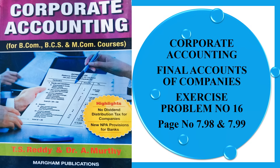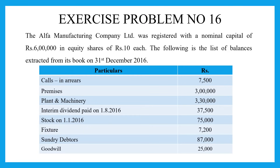Welcome to VL Academy. In this video, Corporate Accounting, Final Accounts of Companies, we will cover Exercise Problem No. 16, which is on page numbers 7.98 and 7.99. It is the 16th problem — the Alpha Manufacturing Company Limited — based on the list of balances as on 31st December 2016.